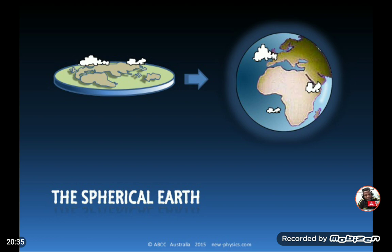After Columbus, Ferdinand Magellan from Portugal was the first human to fully circumnavigate the earth by ship. He traveled from Europe between 1522 and 1524 and made a complete trip around the earth by sea, arriving back in Europe without falling off the edge. These are just some basic proofs that the earth is a sphere — you can also Google 'proofs that the earth is a sphere' online.